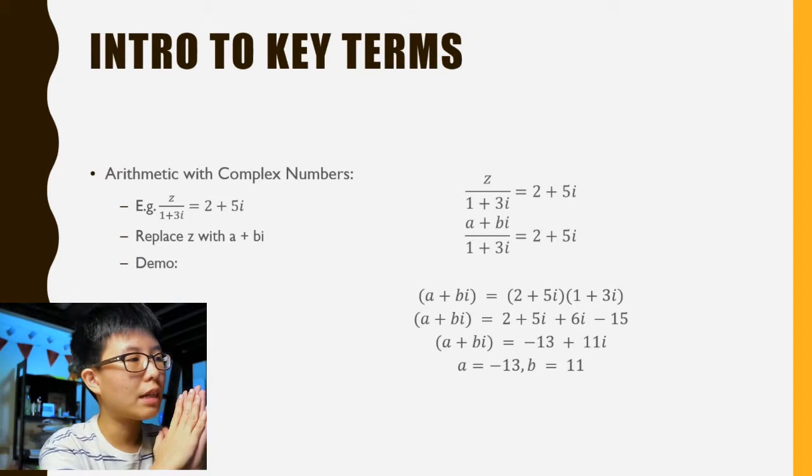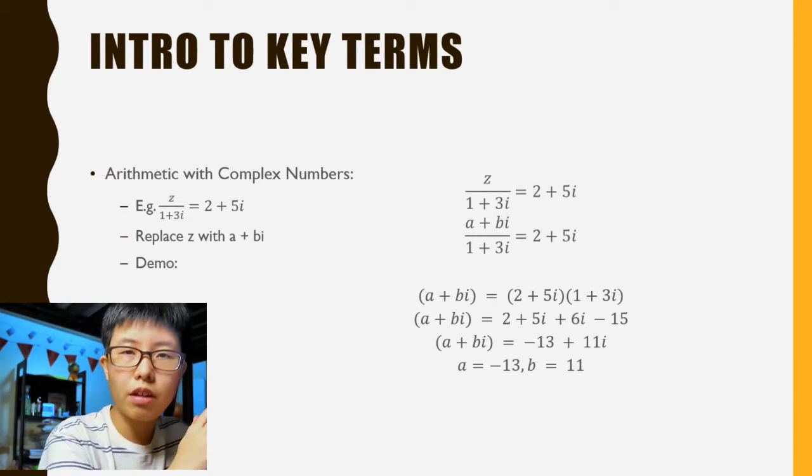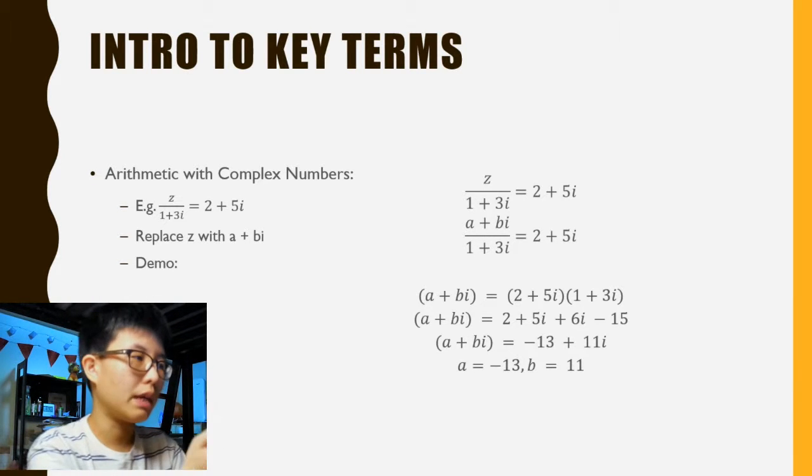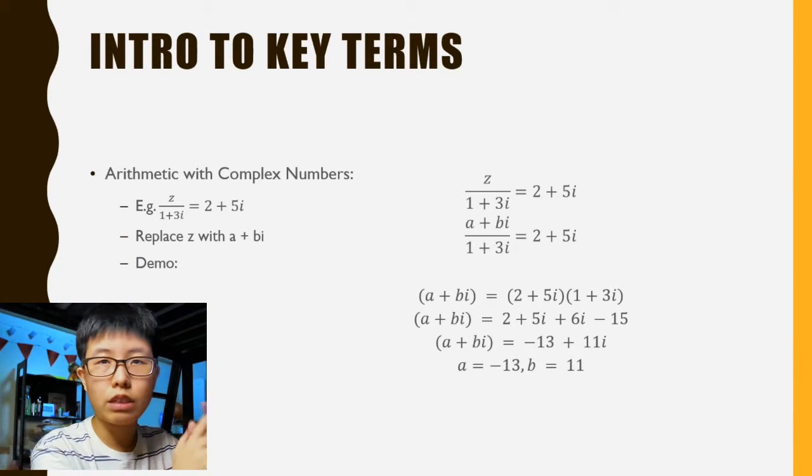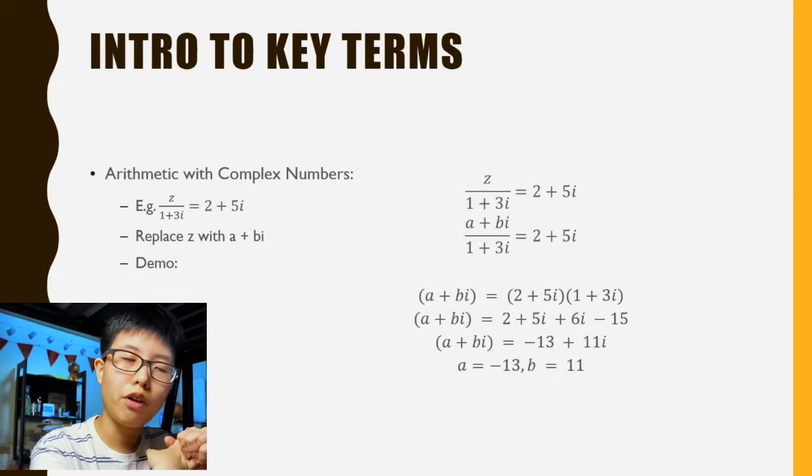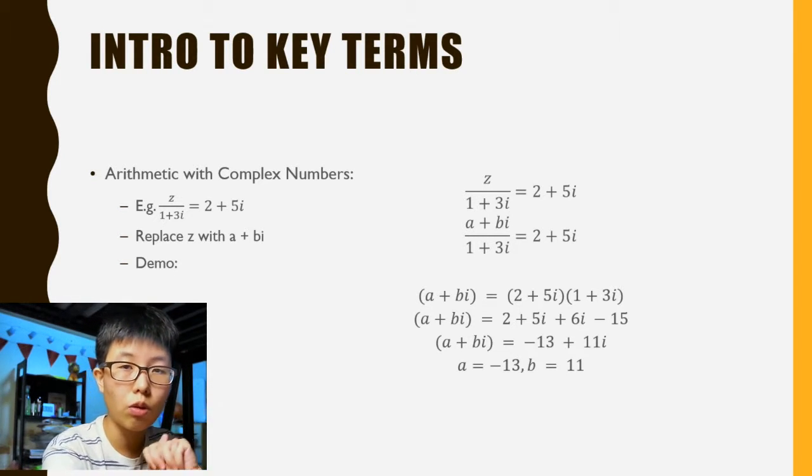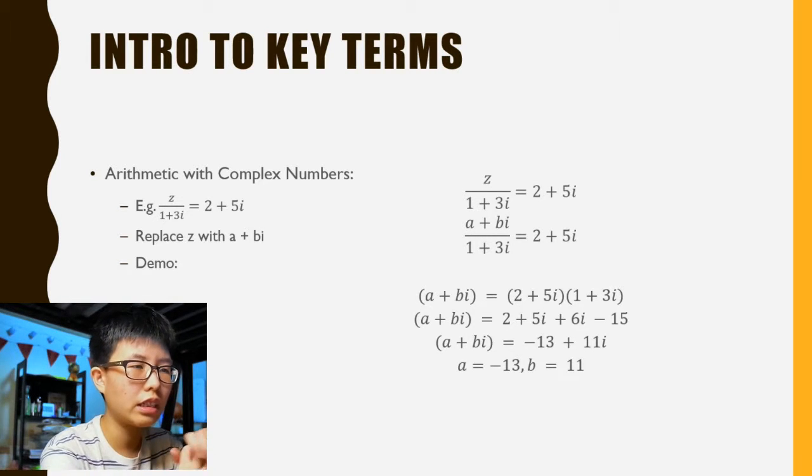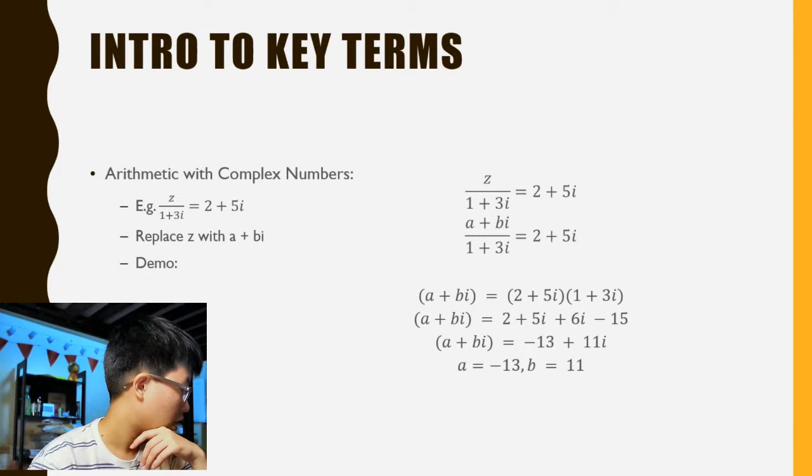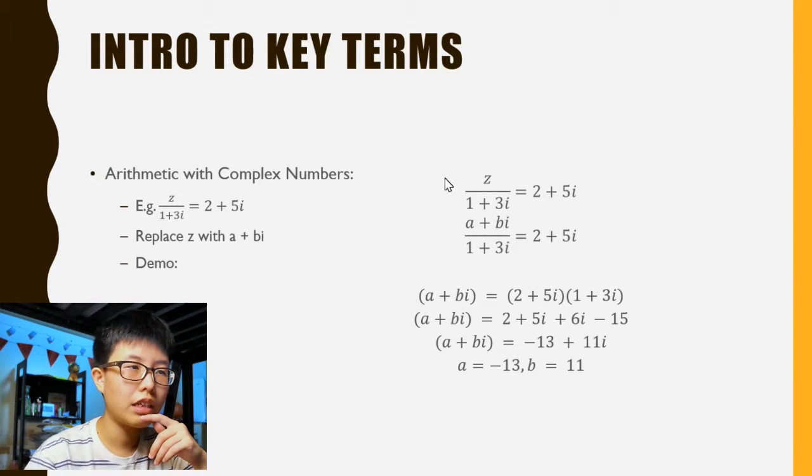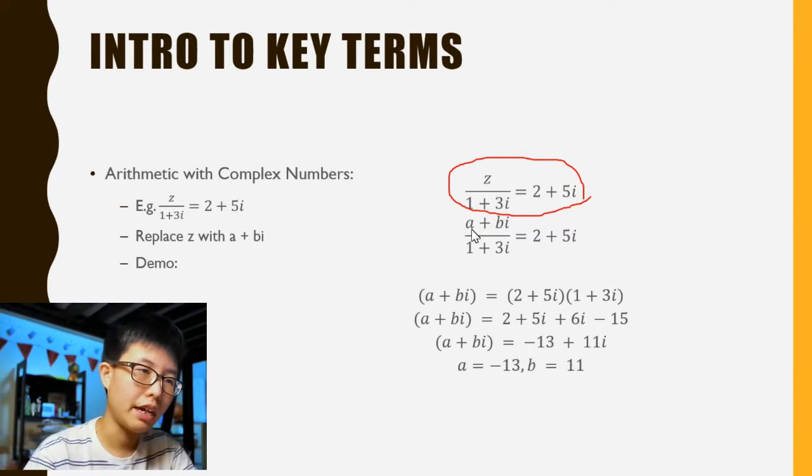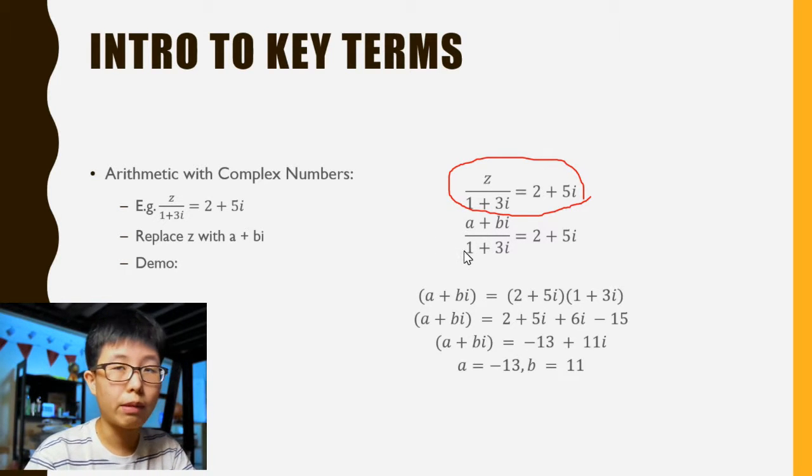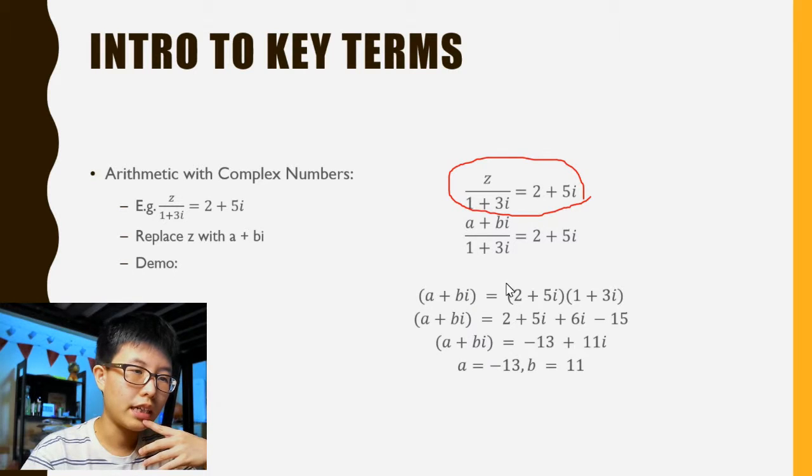Arithmetic with complex numbers - generally what you can do is replace z with a + bi. Let's say they're asking you to find z. We just replace it and then solve for a and b. It works very much like comparing coefficients. As you can see, your first equation is z over (1 + 3i) equals 2 + 5i. After substituting, you have a + bi. Then you multiply the (1 + 3i) over to the other side and expand, so we have something that looks a little bit like this.